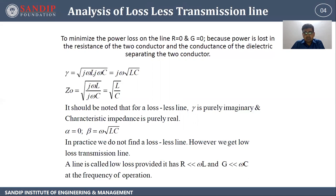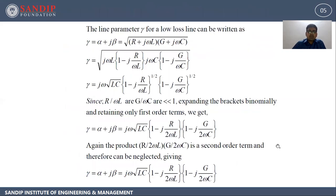A line is called low loss provided it has r very much less than omega-L and g very much less than omega-C at the frequency of operation. The line parameter gamma for a lossless line can be written as gamma equal to alpha plus j-beta, that is equal to under root of (r plus j-omega-L) times (g plus j-omega-C). If I take j-omega-L outside and j-omega-C outside, I get gamma equal to under root of j-omega-L times (1 minus j-r upon omega-L) times j-omega-C times (1 minus j-g upon omega-C).